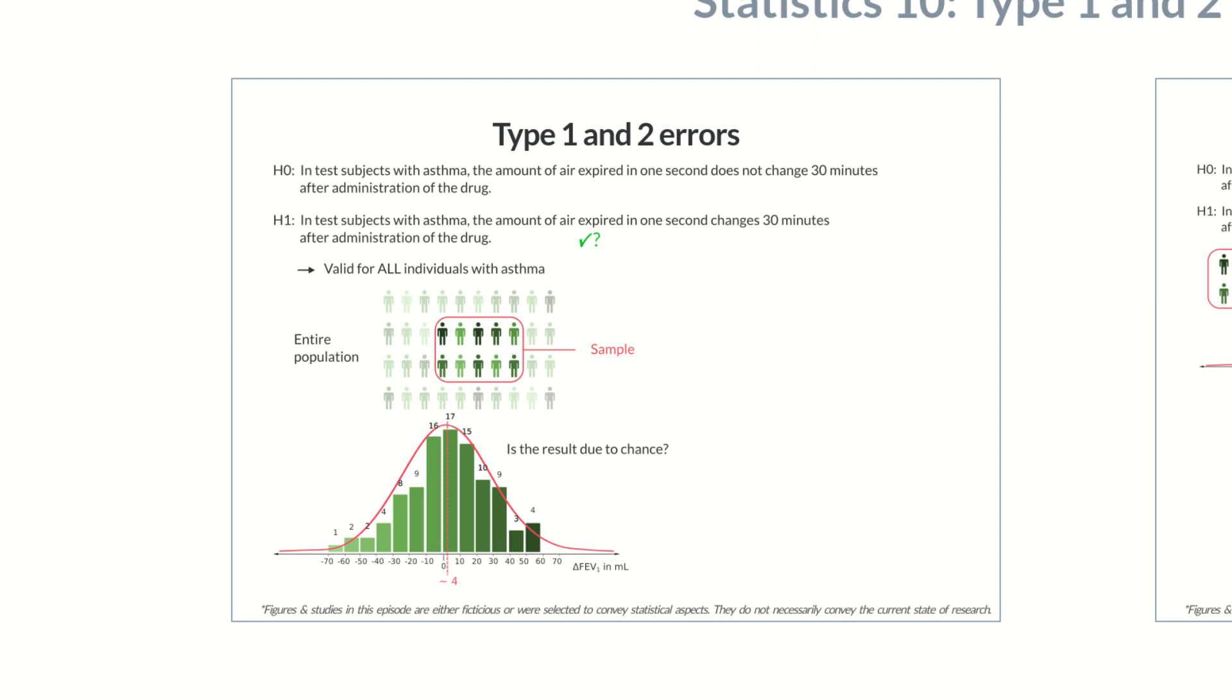This question is important in assessing how certain our study result represents the real relationship. Let's suppose that we reject the null hypothesis based on our observations, even though it's actually true and the observed results were indeed due to chance. We'd then accept a false alternative hypothesis.